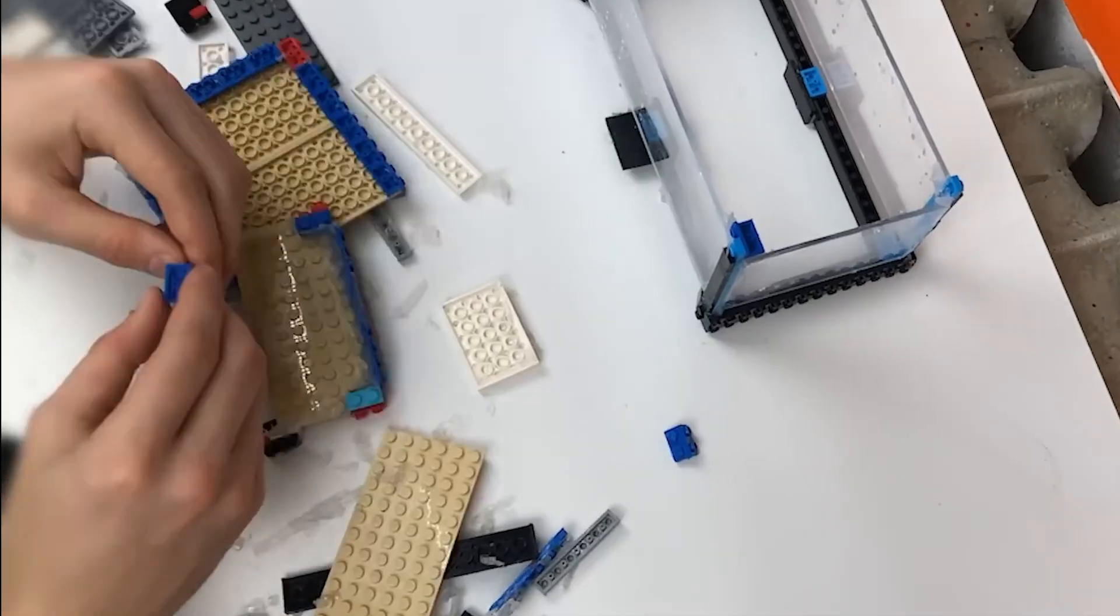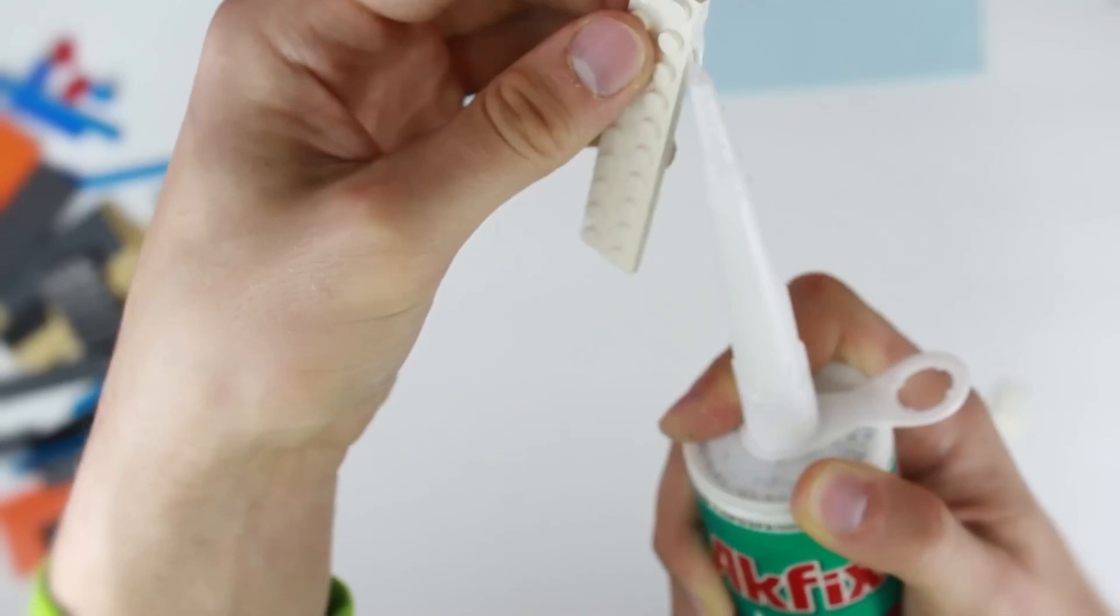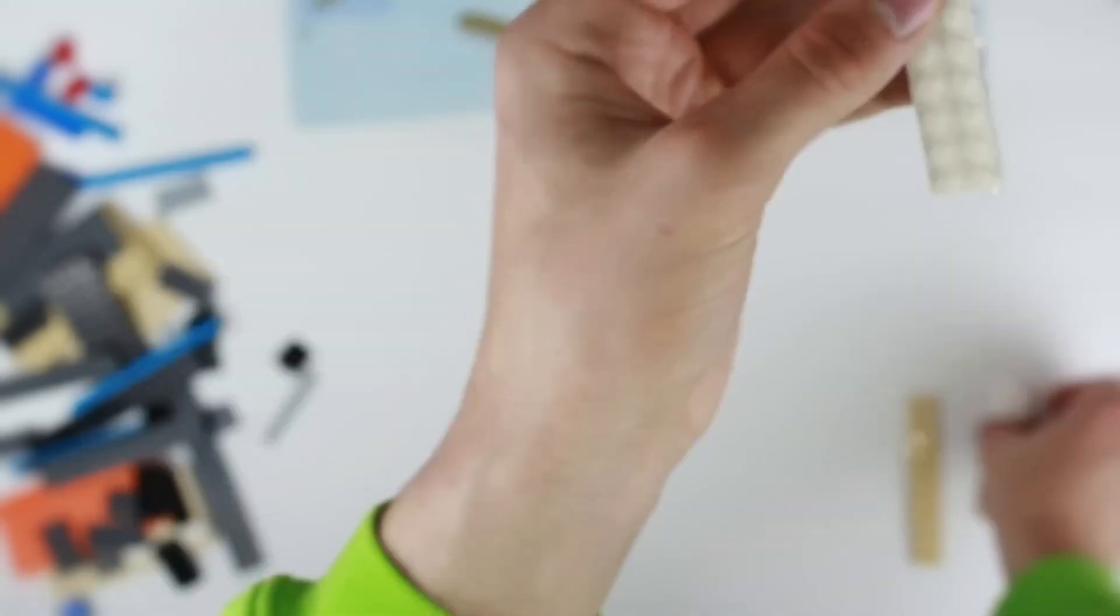As a result, LEGO connections aren't able to ensure sufficient density to keep water in. So we should disassemble everything and build again. But now, sealing every connection.